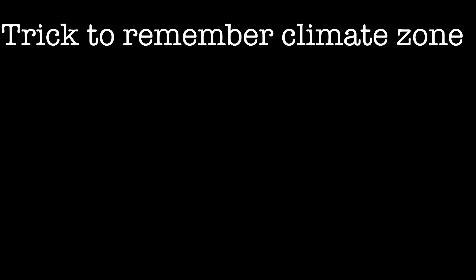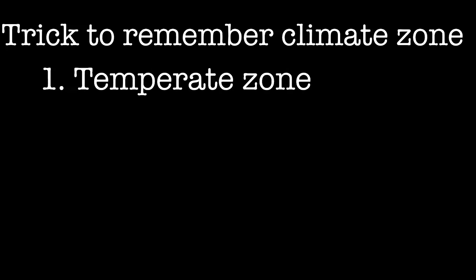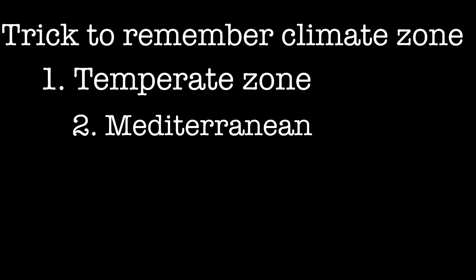To remember all the stability climatic zones, you only need to remember the first zone: the Temperate Zone. From the word 'temperate,' take the first three letters 'tem' — 'T' reminds you of Temperate Zone 1, and 'M' reminds you of Mediterranean Zone, which is Zone 2.